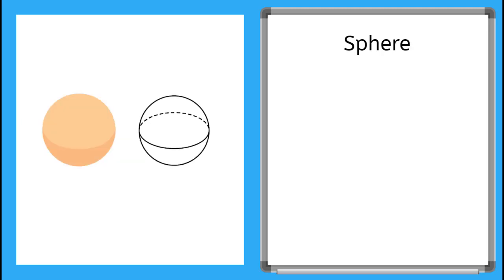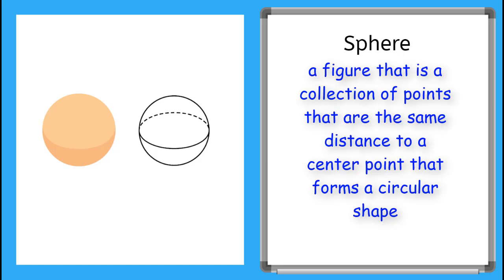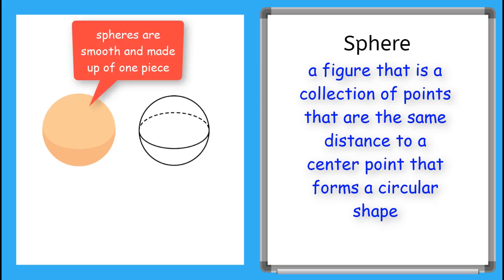The last solid figure we're going to talk about is the sphere. A sphere is a collection of points that are the same distance to a center point that forms a circular shape. You're probably familiar with spheres if you've ever kicked a soccer ball or dribbled a basketball. Those balls are spheres.